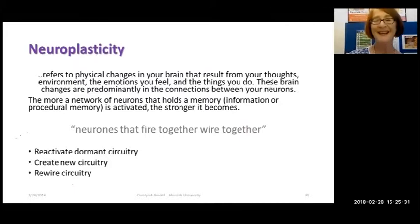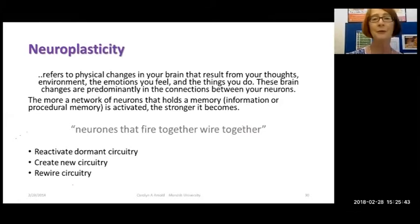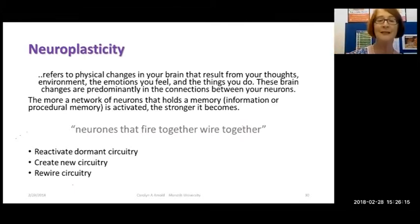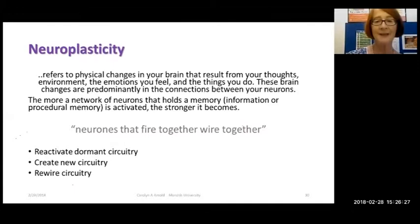Neuroplasticity refers to physical changes in your brain resulting from the inputs of your environment, the emotions you feel, and the things that you do. It's really connections of your neural networks that hold a memory, sometimes for a very long time, and when activated it becomes very strong — the saying that neurons that fire together wire together. Sometimes neuroplastic responses can almost reactivate a dormant circuitry — a contextually stressful environment with a severe accident with a lot of fear can activate fear from previously learned experiences. It can also create new circuitry, break new pathways through, and rewire circuitry. It can sometimes be maladaptive.